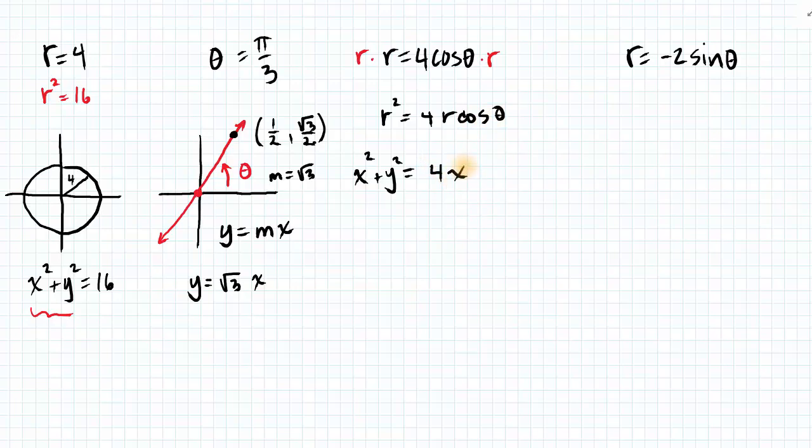Let's go ahead and work these kind of simultaneously because the process is similar, and let's see if we can just notice some patterns. So here we'll have r squared equals negative 2r sine of theta.